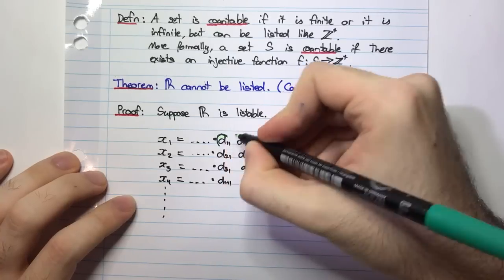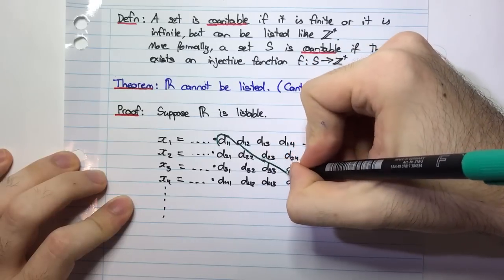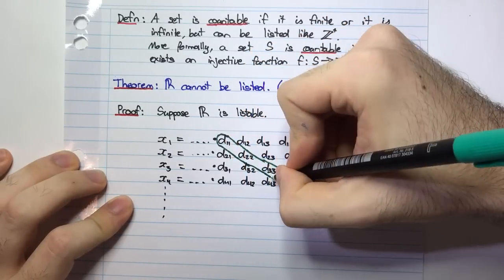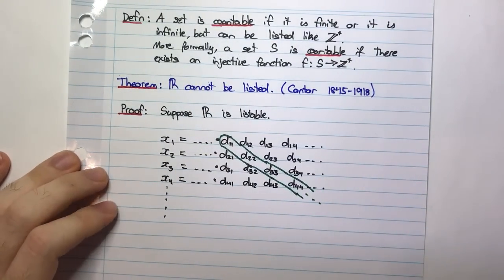So I mean by diagonal, I mean all these numbers here along this diagonal. And I'm going to consider these in some way. And of course, these continue off to infinity forever.